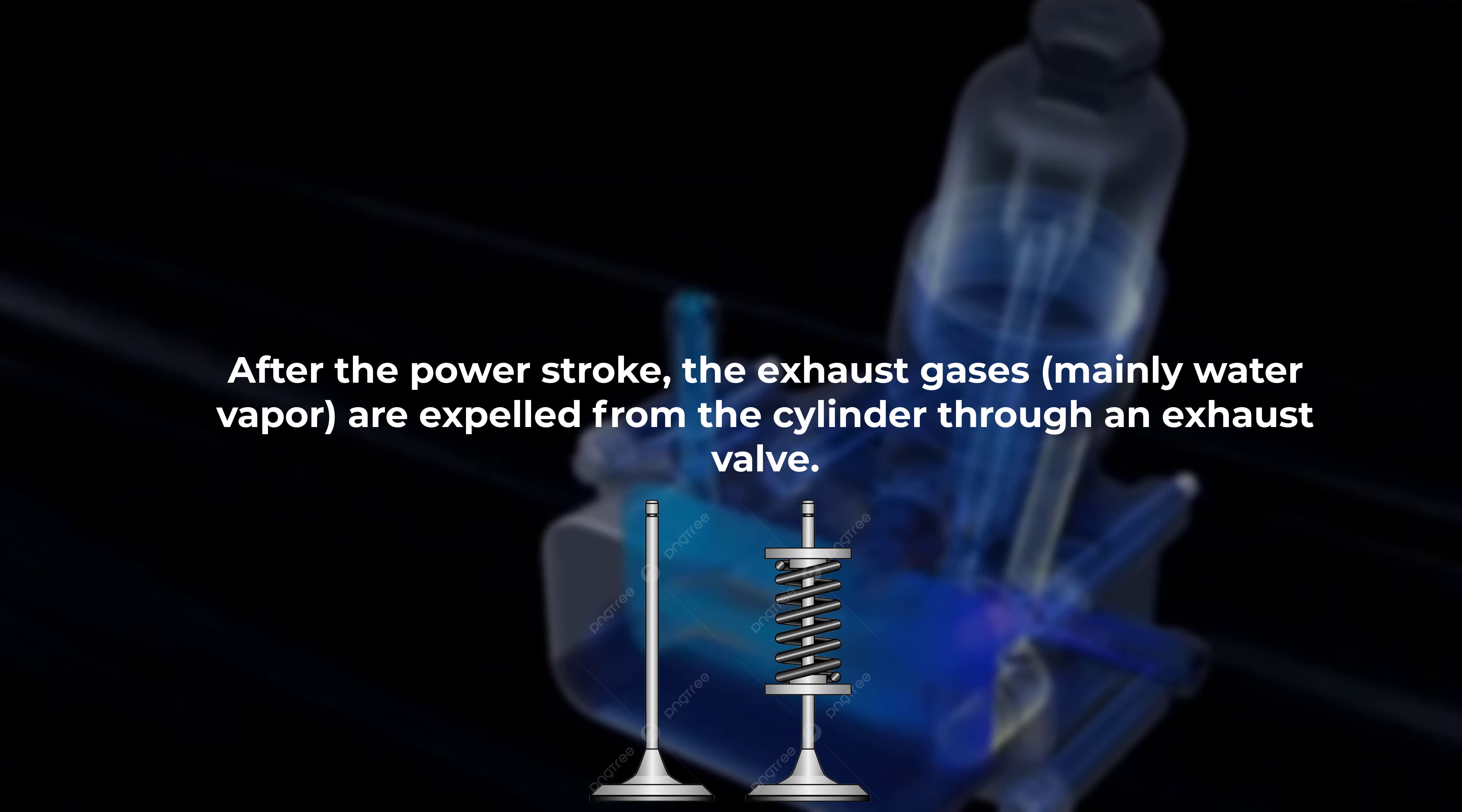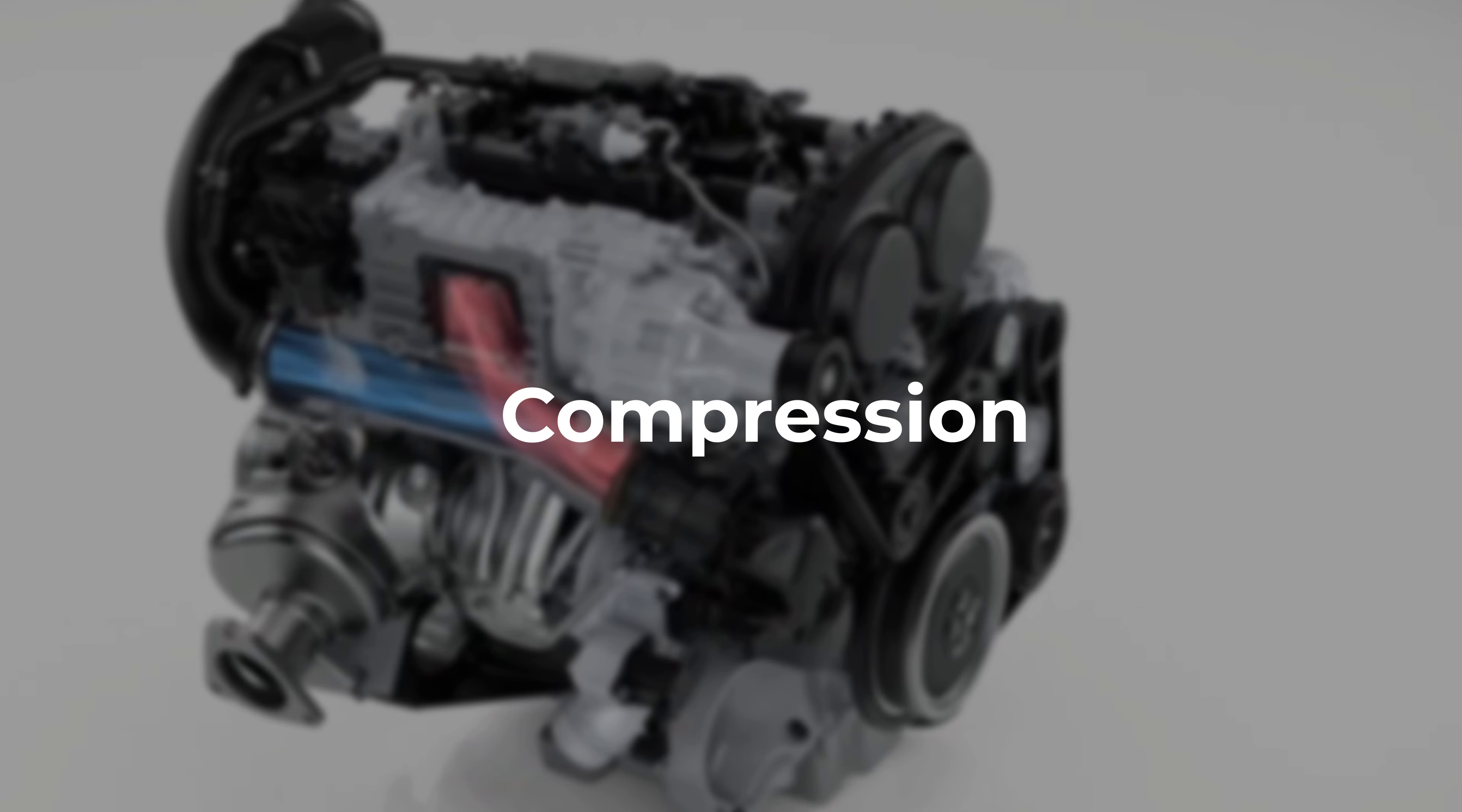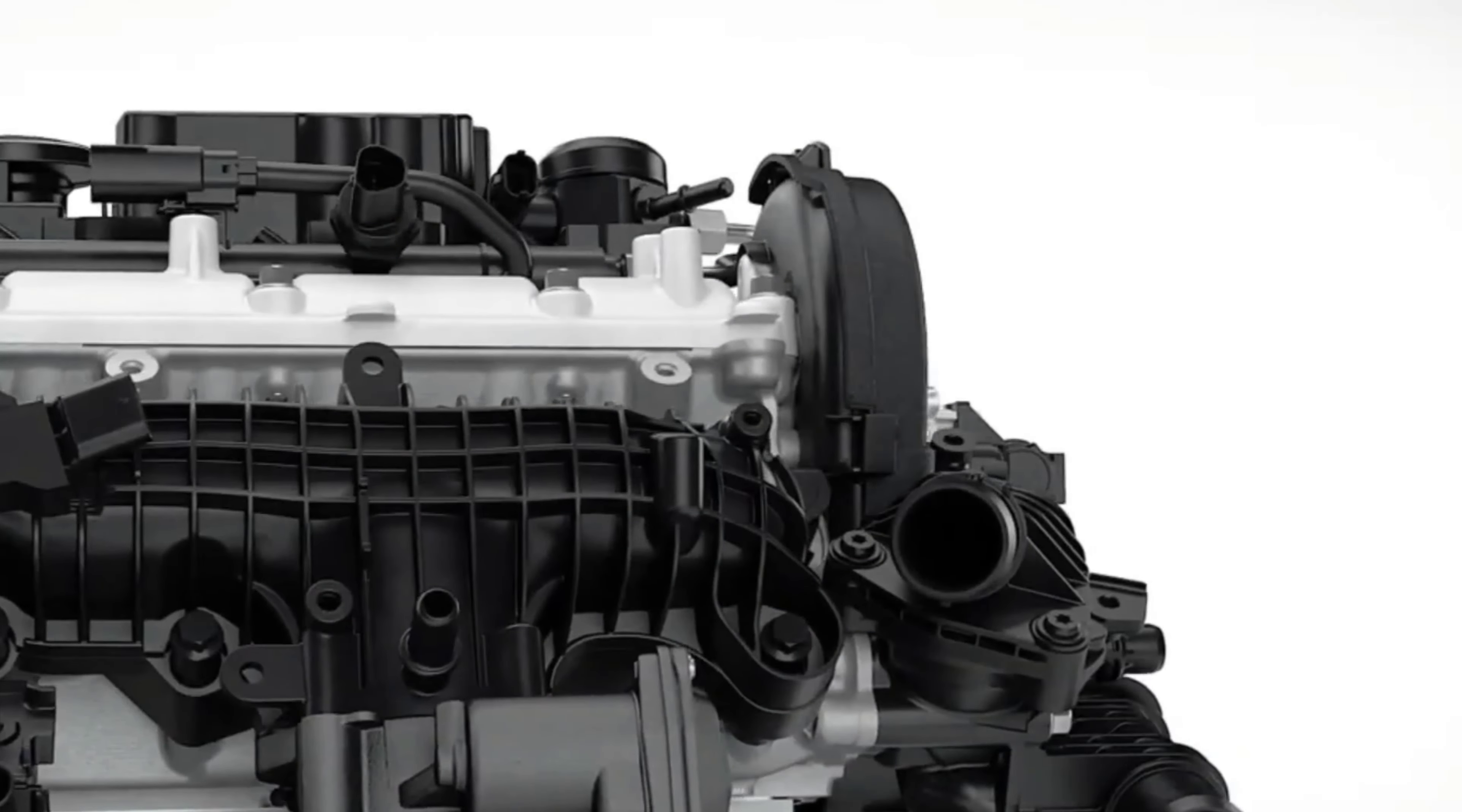After the power stroke, the exhaust gases, mainly water vapor, are expelled from the cylinder through an exhaust valve. The engine's cycles of intake, compression, ignition, and exhaust repeat in rapid succession to produce a continuous source of power, propelling the vehicle forward.